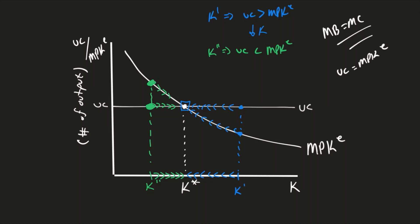We're always going to look at where the user cost of capital equals marginal product of capital. This is the diagram that we're going to use to analyze this in order to get our optimal level of capital, which is represented down here as K star.